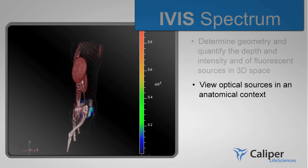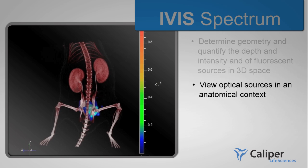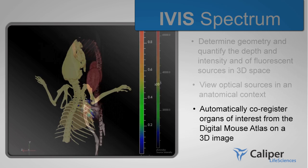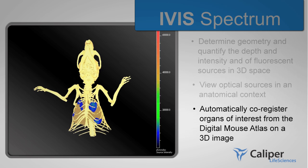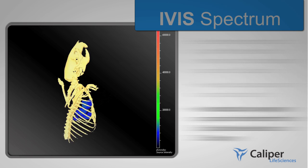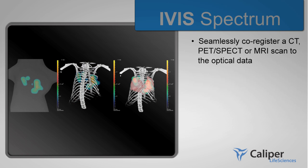View optical sources in an anatomical context. Automatically co-register organs of interest from the digital mouse atlas on a 3D image. Seamlessly co-register a CT, PET SPECT, or MRI scan to the optical data.